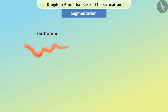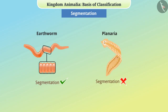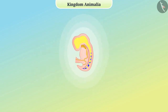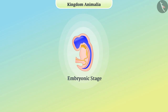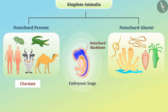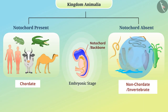The body of some animals, like earthworms, is divided into hierarchical segments on both the external and internal side, while the body of some animals, like planaria, is not fragmented. Classification of Kingdom Animalia can also be done based on the presence of a rod-like structure called a notochord or backbone. Animals whose notochord is present in the embryonic stage are called chordates, whereas animals in which the notochord is not present are called non-chordates or invertebrates. Let's explore the subclasses of invertebrata in this video.